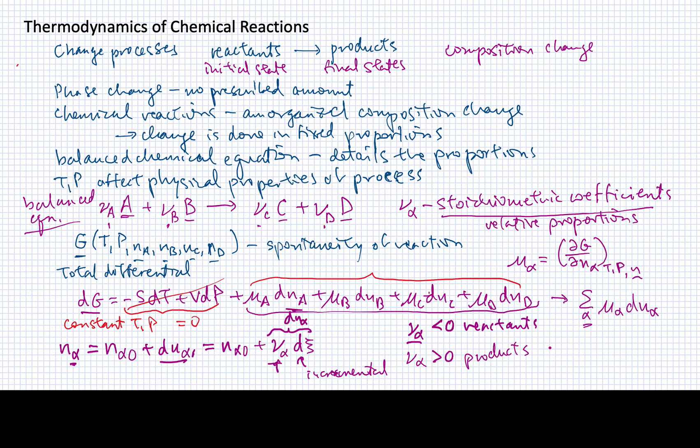So it means then that we can write our dG. I'm running out of room, but I'll try to get it in here. Our dG can essentially be written as a sum over all of the components of the reaction times μ_α times this stoichiometric coefficient with the sign added, negative if it's reactant, positive if it's product, dξ. This Greek letter is ξ. It's like the Greek X.